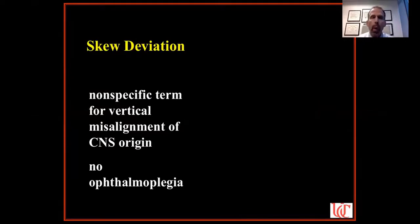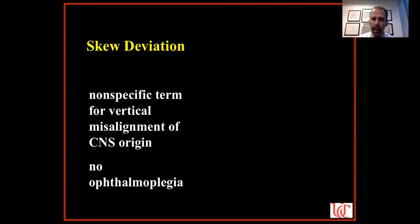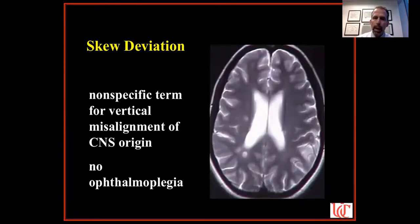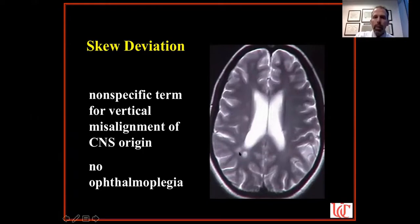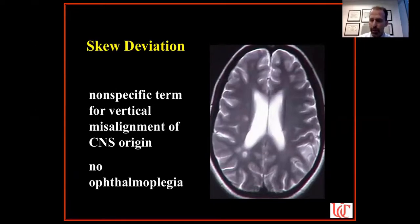We call this vertical misalignment a skew deviation — a wastebasket term for vertical misalignment of CNS origin. It's not a third nerve palsy, not a fourth nerve palsy, not an orbital process. It can be comitant or incomitant. There's no ophthalmoplegia because it's a supranuclear problem — just misalignment. In this young lady's case, the most common cause in the United States would be demyelinating disease. Her MRI showed typical MS plaques, confirming a skew deviation of central nervous system origin.